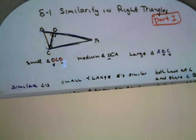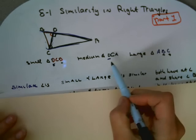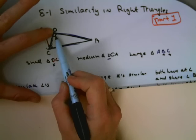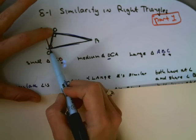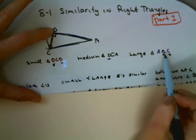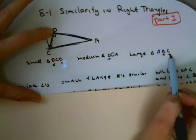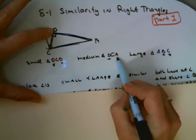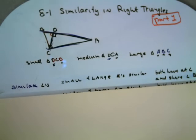Also, if you look at the medium and the large triangle, this medium triangle has a right angle at D, and the large one has a right angle at C. So they have one pair of corresponding congruent angles, and they both share angle A. So they also are similar by angle-angle similarity.